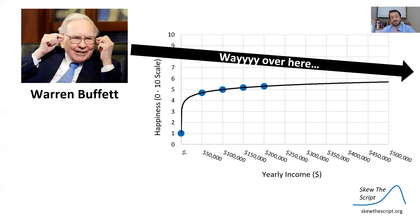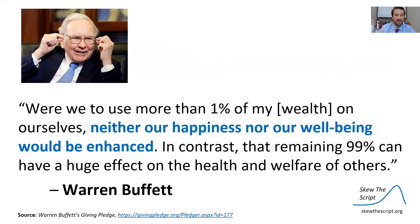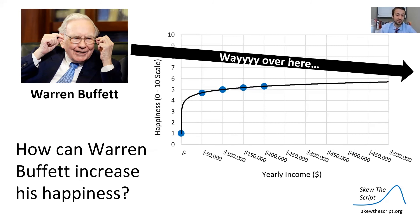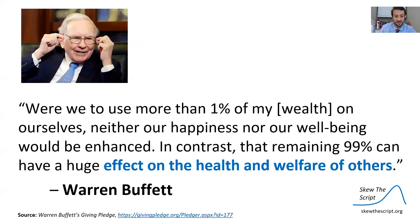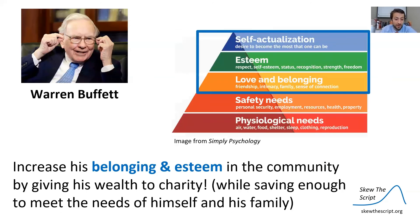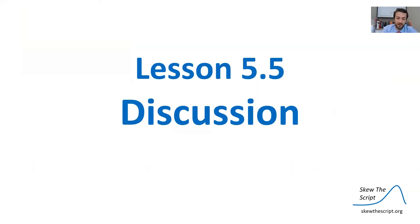We can now return to Warren's quote — that neither his happiness nor his well-being would be enhanced by extra money. Since he's so far along the diminishing returns curve, he can't get happier by earning more. However, he notes that giving away 99% of his wealth has a huge effect on the health and welfare of others. By giving to his community and to charity — while still saving enough to meet his own needs — it increases his belonging and esteem because he's helping and serving others. So it helps him reach the top of Maslow's pyramid.